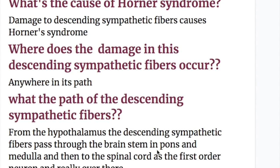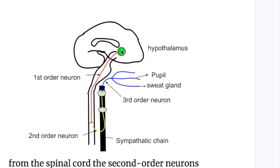The damage occurs anywhere in the path of the descending sympathetic fibers. From the hypothalamus, the descending sympathetic fibers pass through the brainstem — the pons and medulla — to the spinal cord, shown in red here. These are the first order neurons, and they relay in the spinal cord. The second order neurons from the spinal cord go to the sympathetic trunk, and then from the superior cervical ganglion, the third order neurons arise, supplying different structures and muscles like sweat glands, dilator pupillary muscles, and muscles of the eyelid.